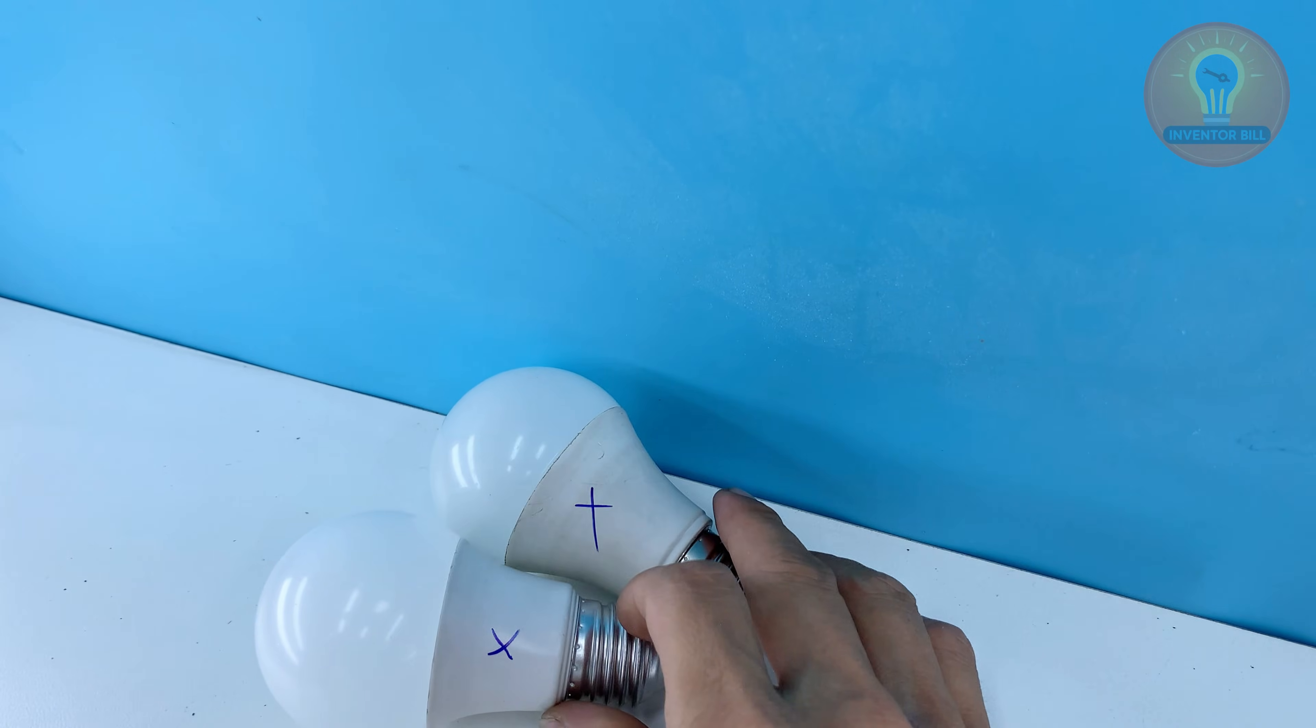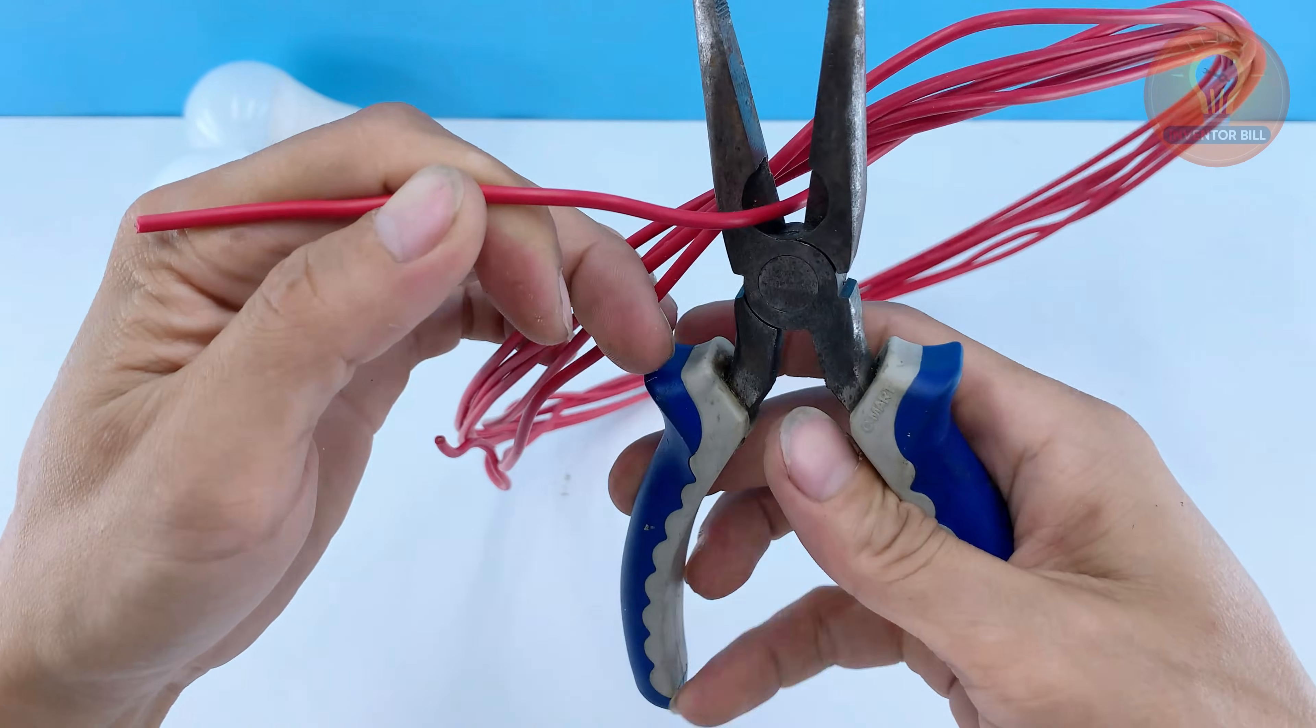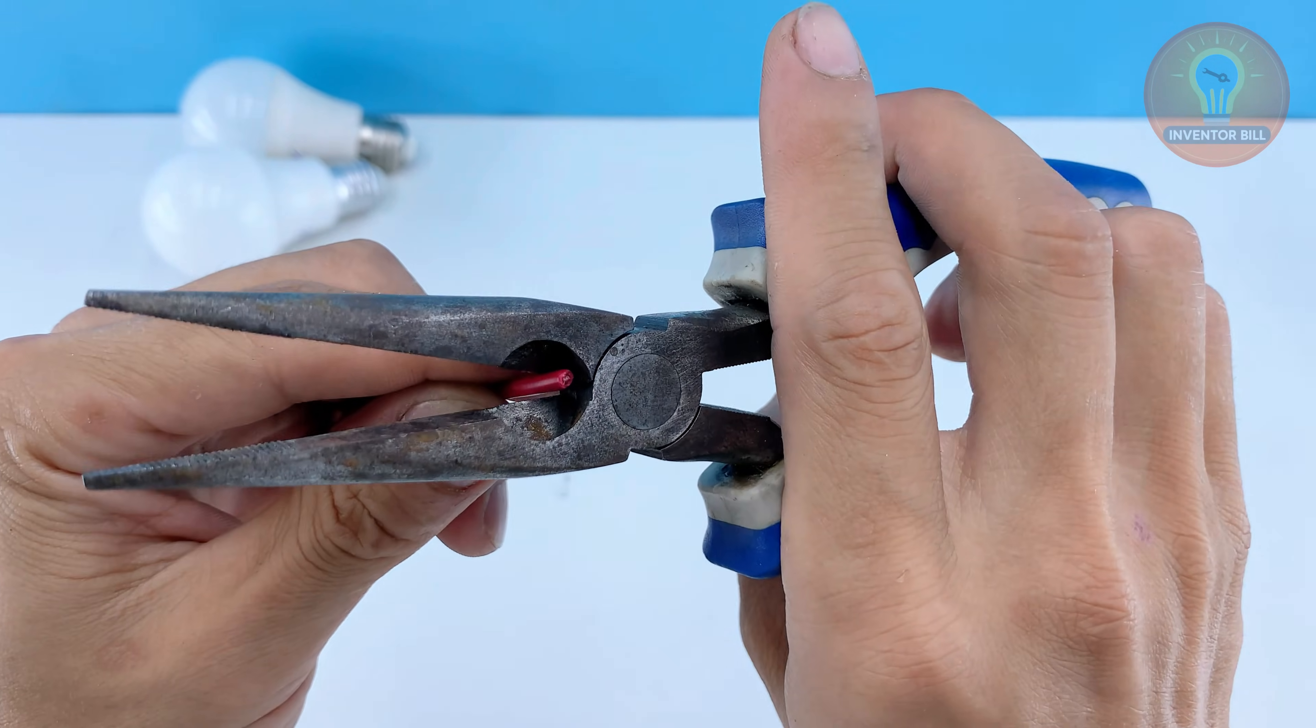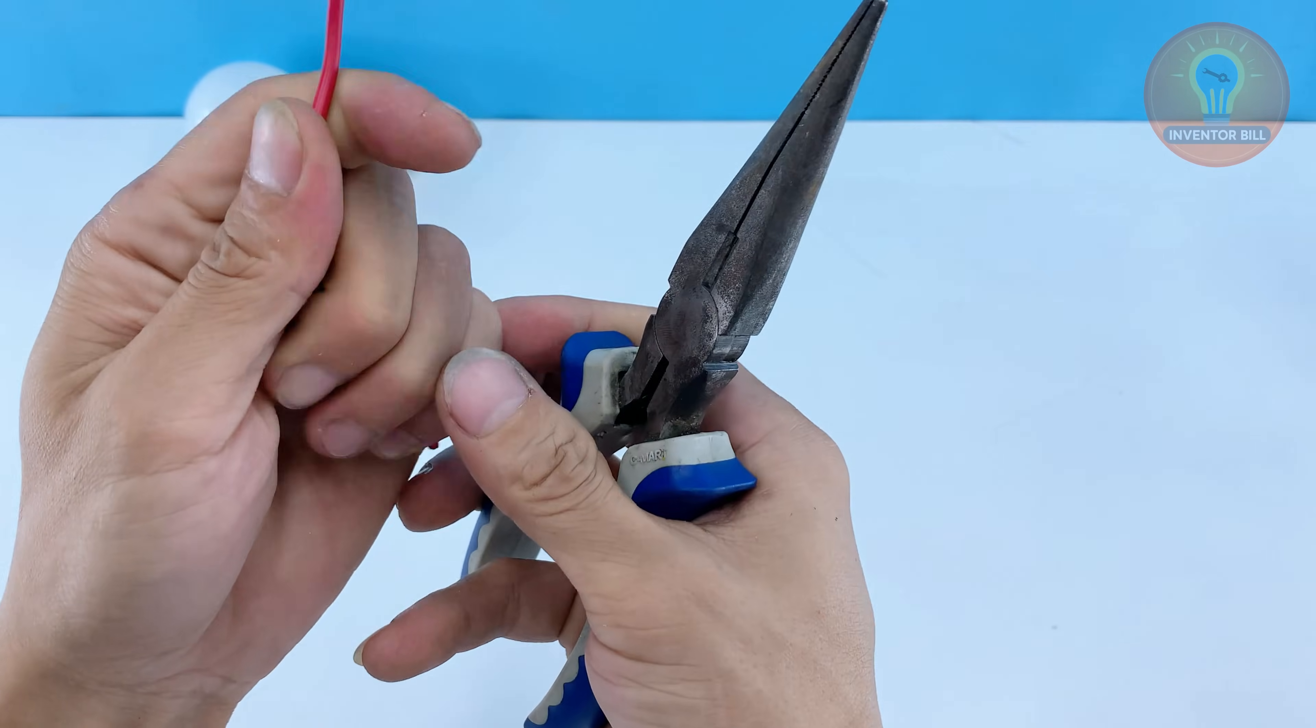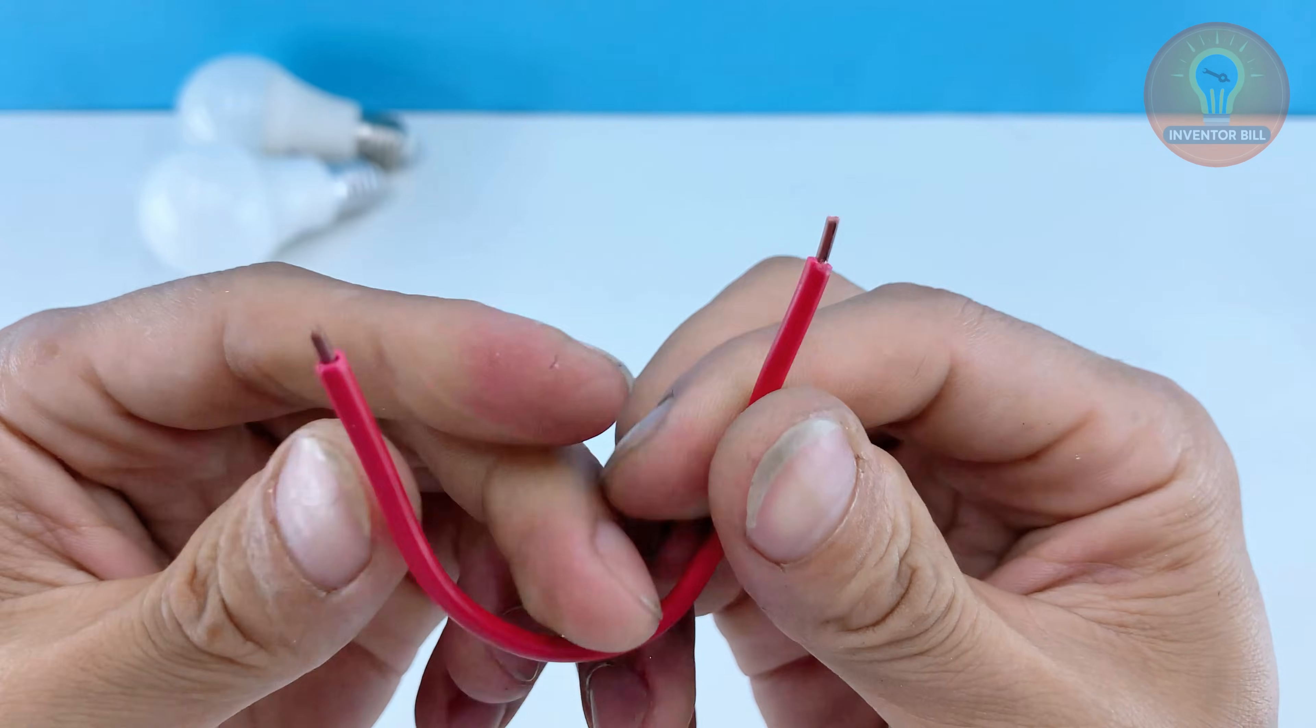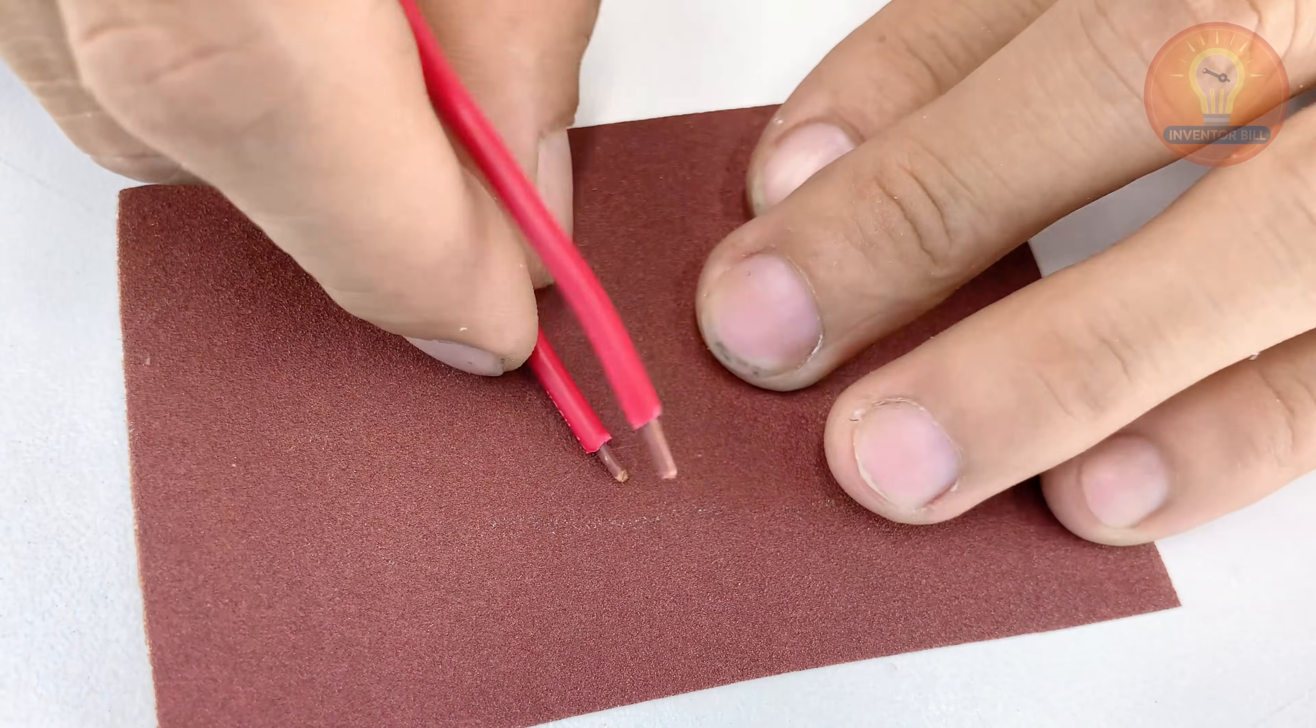To start checking the faulty bulb you can make a simple pair of test tweezers right at home. Take a piece of thick copper wire and strip both ends so the copper is clean. Bend the wire into a tight U shape that feels firm in your hand.